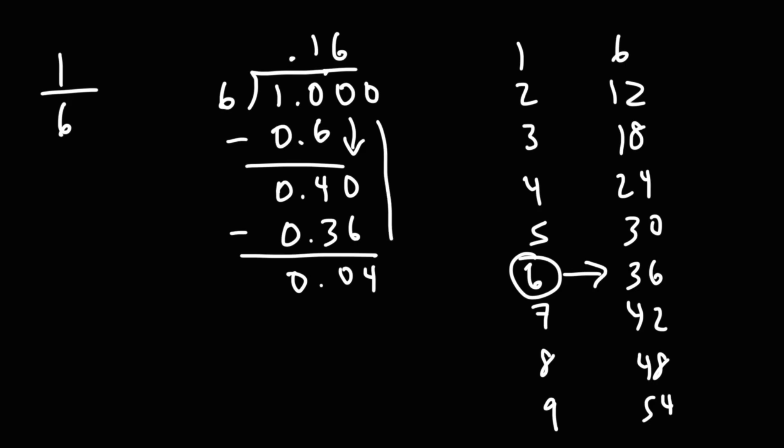If we bring down another 0, notice that we have a 4 again. So that tells us that the pattern is going to repeat. 6 goes into 40 six times. We're going to get 36. And this is going to give us another remainder with a 4.